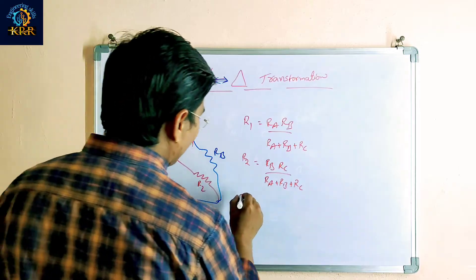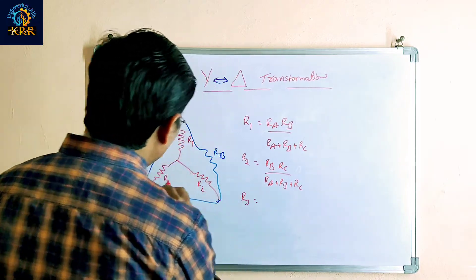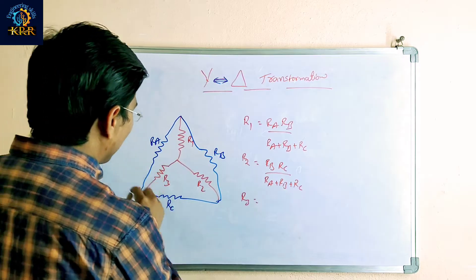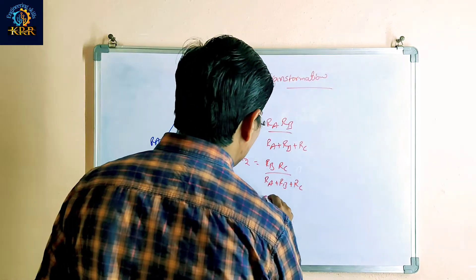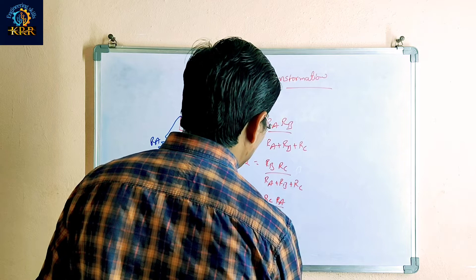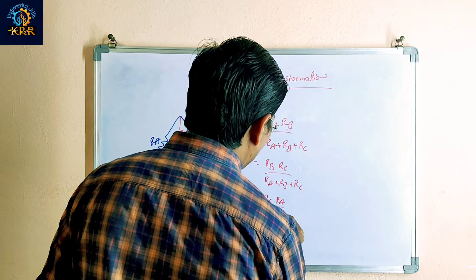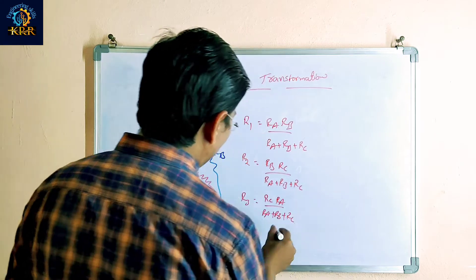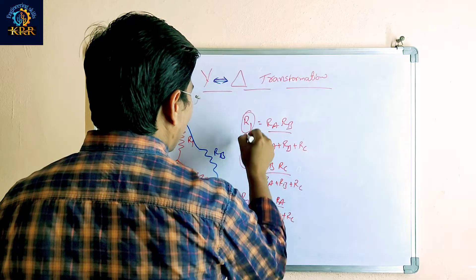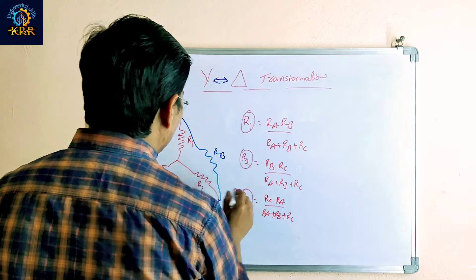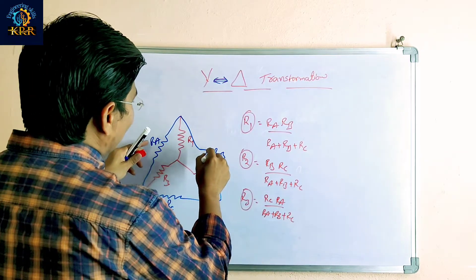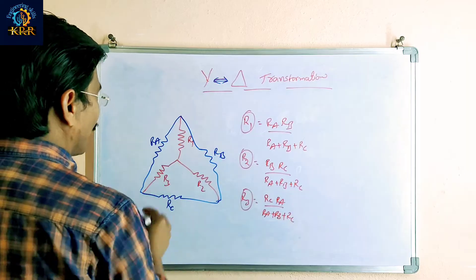Next, R3 is equal — this is the R3, using the remaining side branches. These three branches we can calculate. Means delta as given, you can calculate star.